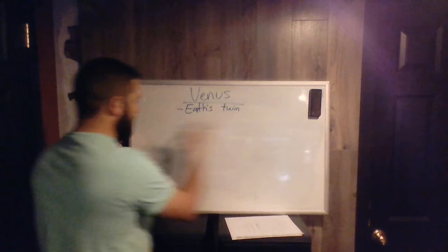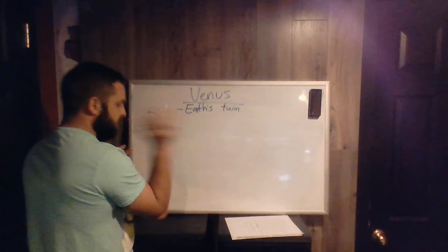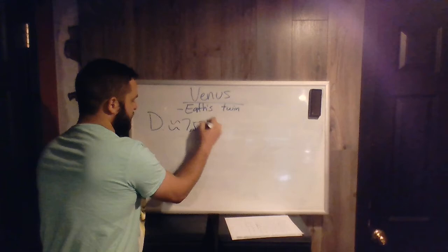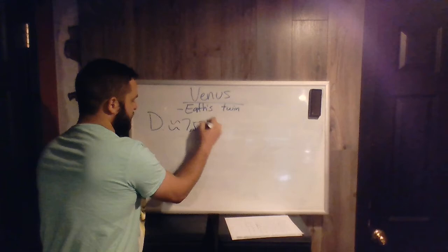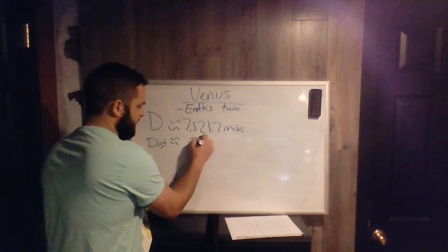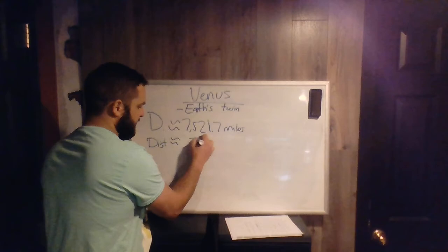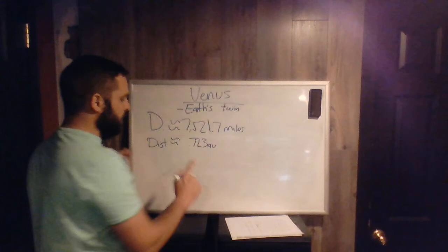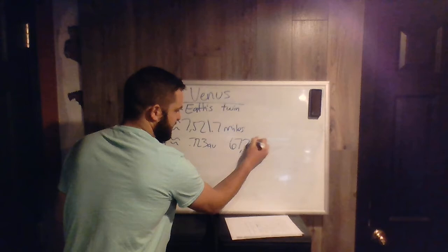We're going to talk about a couple of things that we have already learned. The diameter of Venus is approximately 7,521.7 miles. This is where I say it's Earth's twin, because Earth is pretty similar to that. Also the distance from the Sun is around 0.723 astronomical units, so not quite one — a little bit less than that — or about 67,239,000 miles.